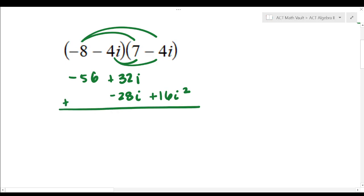I like to stack these and have a lane for each of the like terms, so that I make sure I don't forget anything and I stay really organized. So the negative 56 comes down and then 32 minus 28 is four, I need the i there. And then we have 16i squared.